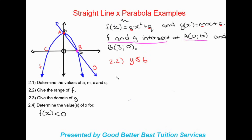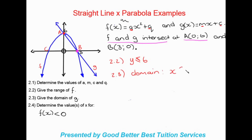Question 2.3 asks for the domain of G, the straight line graph. Domain refers to the x-values, and for a straight line all x-values are infinite. Therefore the domain is x ∈ ℝ (all real numbers), meaning it goes on forever with every possible x-value.